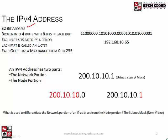An IPv4 address is broken into four parts with eight bits in each part — we call those octets. Each part is separated by a period. We've made it easier for human beings to say an IPv4 address this way. Instead of reciting 32 individual bits, we've changed it into a decimal format by breaking it up into four parts, each with eight bits.